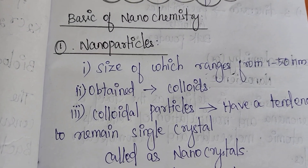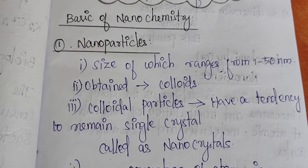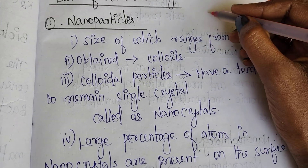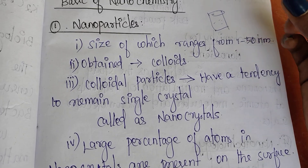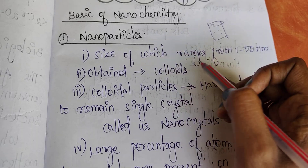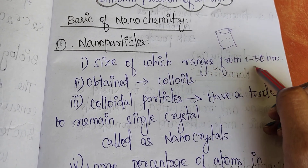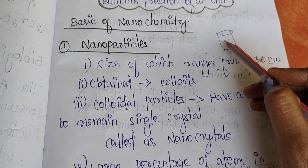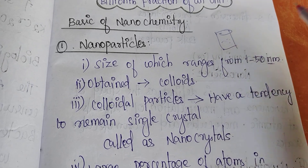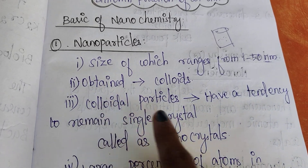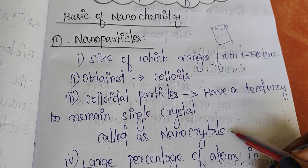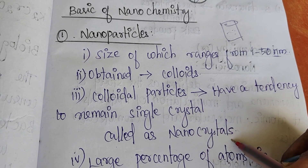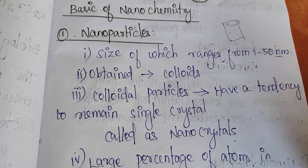Basics of nano chemistry: how to see nanoparticles. Nanoparticles have a size of 1 to 50 nanometers. Colloidal particles are present. Colloidal particles have a tendency to remain single crystals — that is what we call nanocrystals.